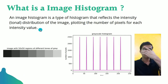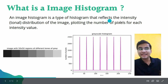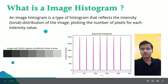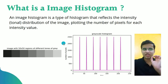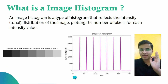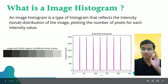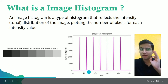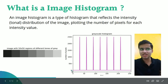An image histogram reflects the intensity distribution of an image. On the x-axis are the intensity values, and on the y-axis is the number of pixels containing that particular intensity.